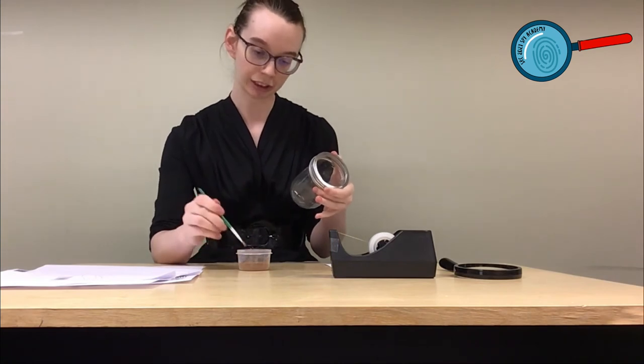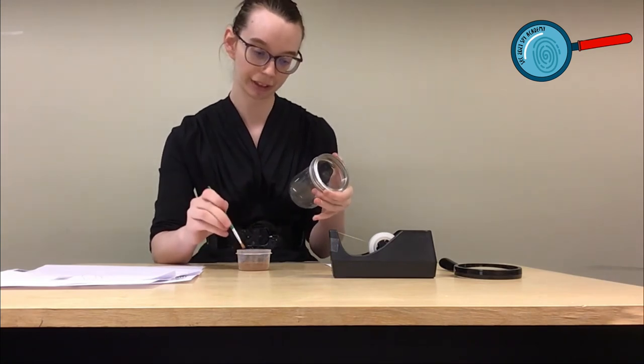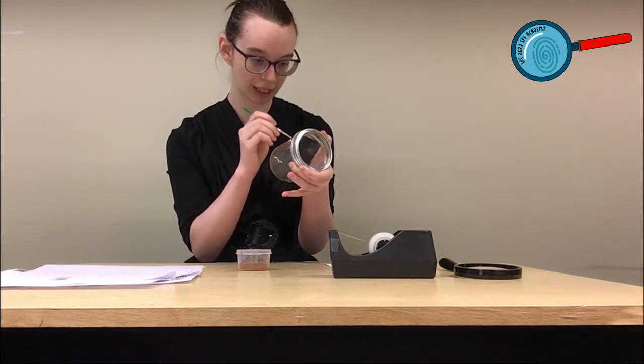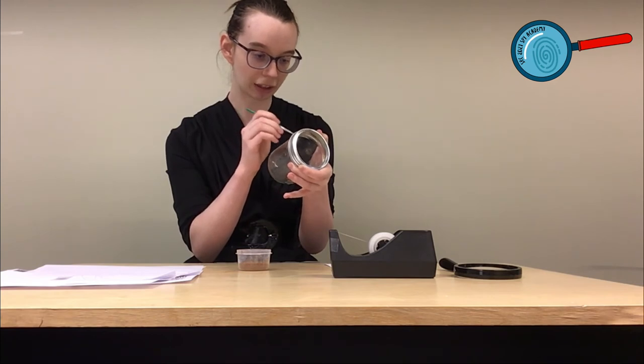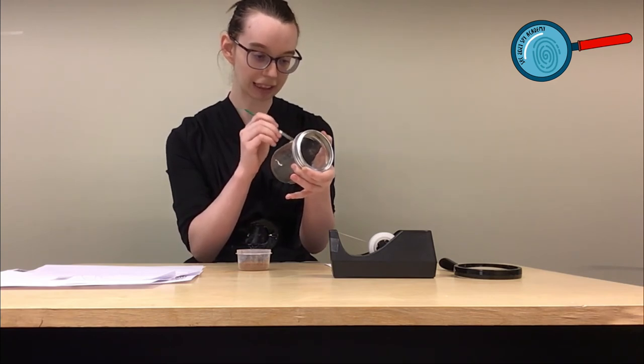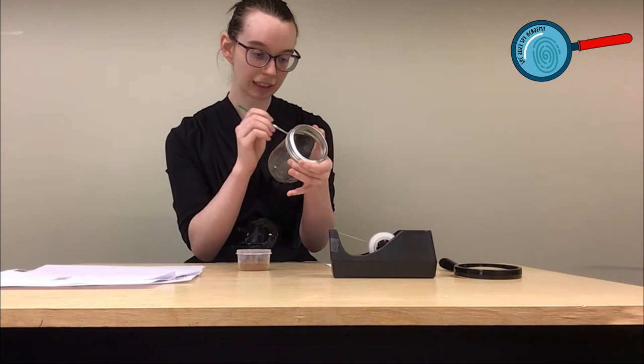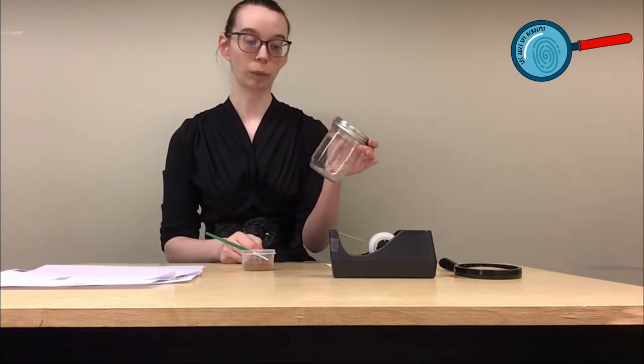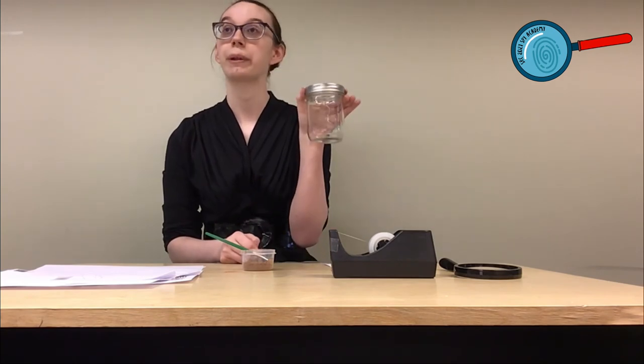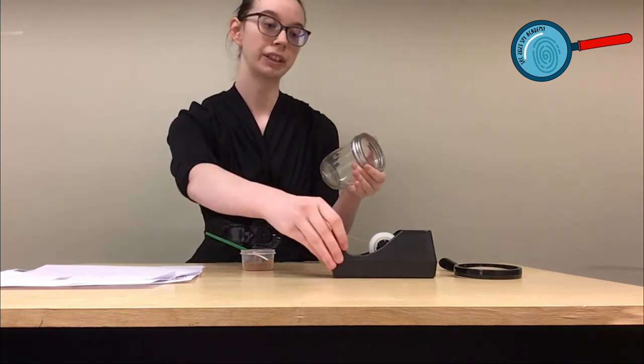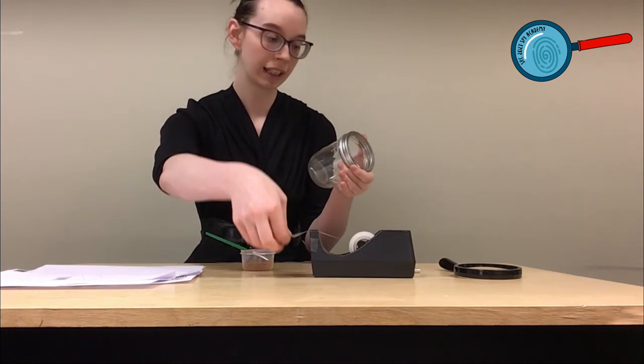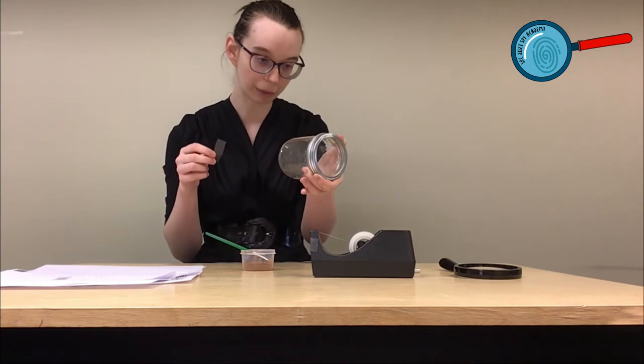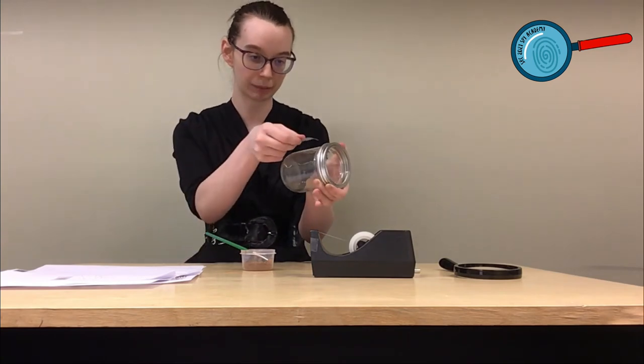I'm going to take my brush, and you don't need a whole lot of cocoa powder, and you're just going to carefully brush over where you think that print might be, and you'll start to see that the cocoa powder is going to stick to the oils in the fingerprint, and it will seem to be visible. So once you can see your fingerprint, we're going to take our tape and gently place it over where we can see the fingerprint. I'm going to blow away some of the excess cocoa powder. There's my fingerprint.